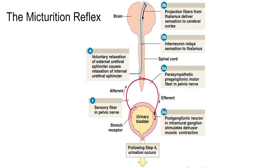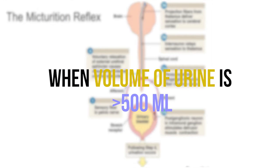The postganglionic neuron in the intramural ganglion stimulates detrusor muscle contraction, while the interneuron relays sensation to the thalamus. Projection fibres from the thalamus deliver sensation to the cerebral cortex. Then voluntary relaxation of the external urethral sphincter causes relaxation of the internal urethral sphincter. This stretch receptor stimulus triggers the micturition reflex when the volume is more than 500 ml.